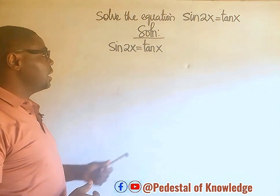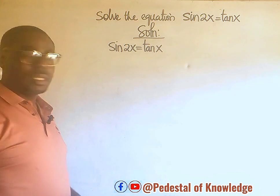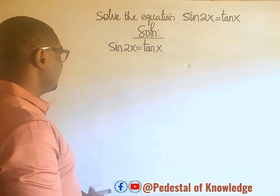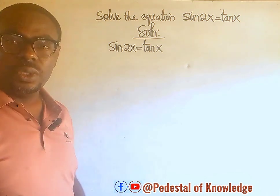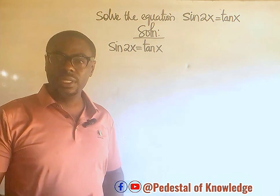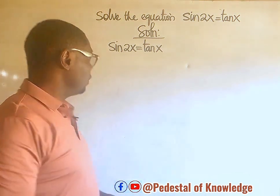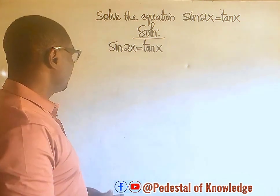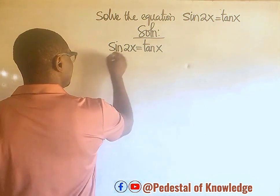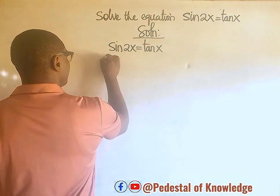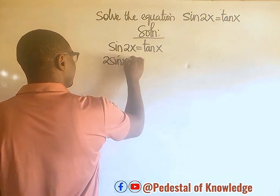Solve the equation sine 2x is equal to tan x. In other words, what value of x satisfies this equation? So what we are going to do is to engage the various identities we have in trigonometry. One of the identities says that sine 2x is the same thing as 2 sine x cos x.